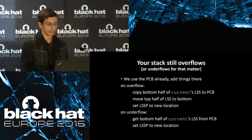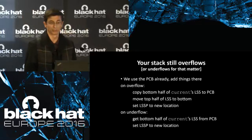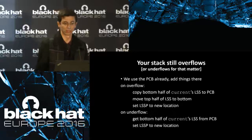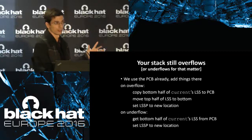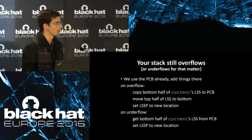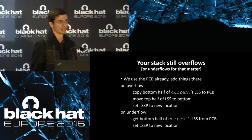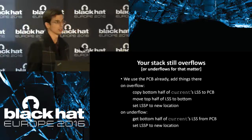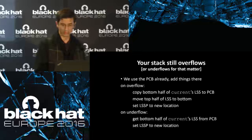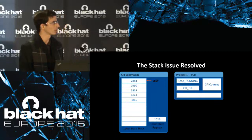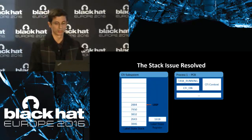On shadow stack overflow, we copy a portion of the shadow stack into the process control block, move the top portion to the bottom using a flash copy on hardware, then set the shadow stack pointer to its new location. The underflow process is effectively the same in reverse — retrieve from the process control block and put it back into the shadow stack, then update the shadow stack pointer. Execution then continues as normal.